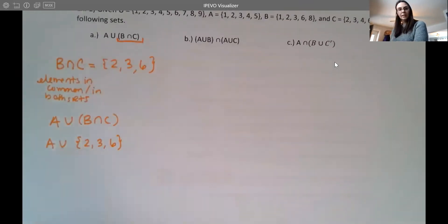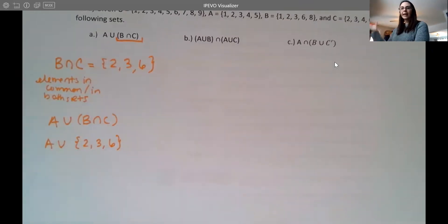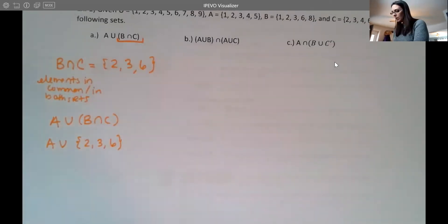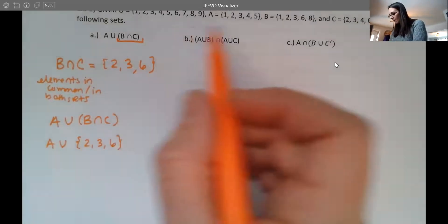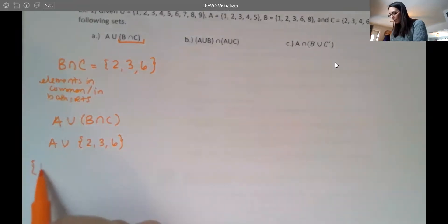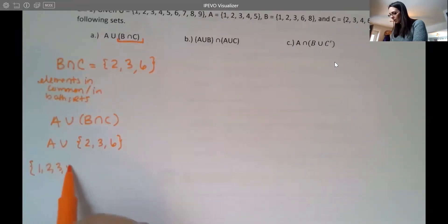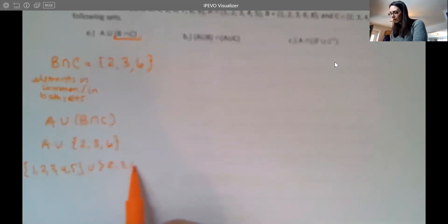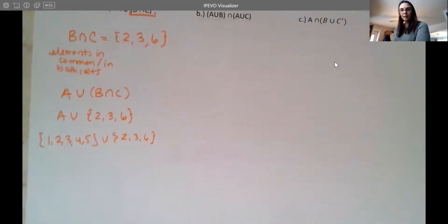Now union is different than intersection. So union means we combine everything together. Think of the word unite. So unite these two groups. So for A, I have one, two, three, four, five. That's my set for A. And then my set for B intersects C was two, three, and six.